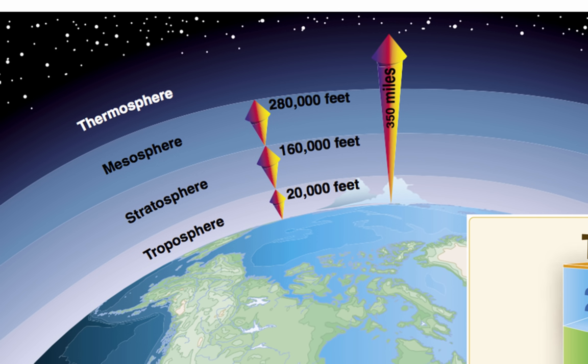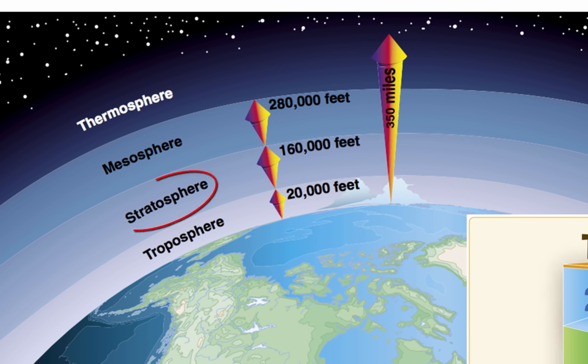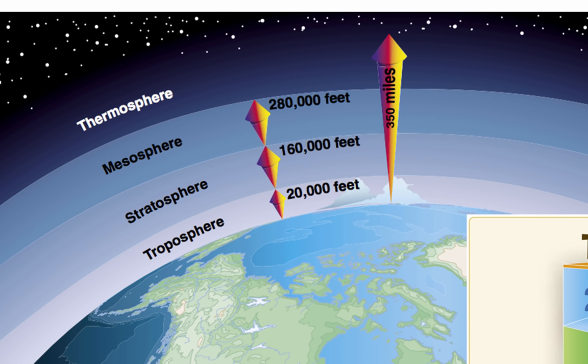Above the troposphere and before the stratosphere, there is a region called the tropopause. This region traps moisture in the troposphere and the associated weather. Above the tropopause are three more atmospheric levels. The first is the stratosphere, which extends from the tropopause to a height of about 160,000 feet. Little weather exists in this layer and the air remains stable, although certain types of clouds occasionally extend into it. Above the stratosphere are the mesosphere and thermosphere, which have little influence over weather.